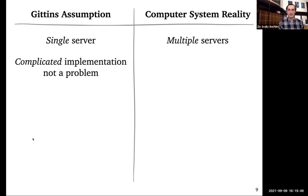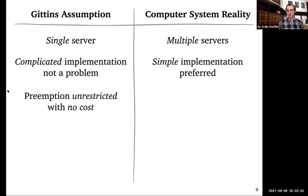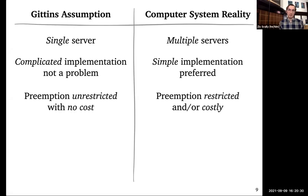Another issue is that the Gittins policy is complicated. In theory that's fine — a mathematical expression proves the theorem. But in practice you want something simpler, easier to implement and maintain. Also, we've been assuming we can preempt jobs at any time with no cost, but in practice preempting a job may not be free — it might take time or only be possible at certain specific points.